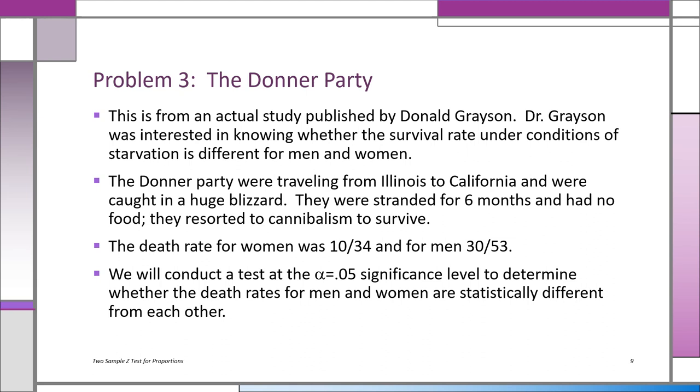We know the death rate for the women was 10 out of 34. 10 out of 34 women died, and for the men it was 30 over 53. Now you can see why you need a statistical test—you can't just simply say that more men died; it may just be chance variation. So we're going to test at the 0.05 significance level to see whether the death rates for men and women are statistically different from each other.